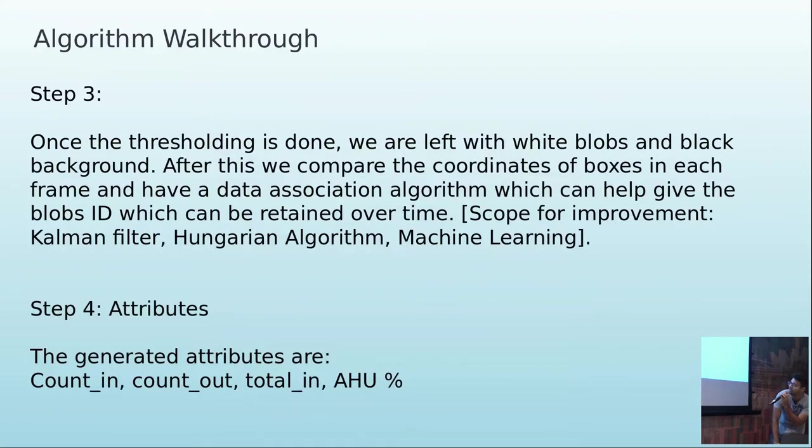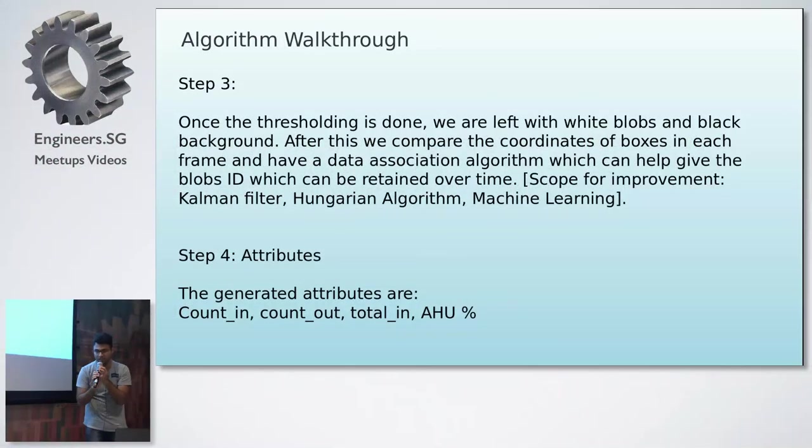These were the attributes we generated: count in, count out, total, AHU percentage. For example, in this room if the number of people increases, the aircon temperature should go down, but it doesn't because it's set point based. We actually proved using an LED that when crowd density increases, you can have an automation protocol linked with it. AHU is air handling unit - a term used in chillers and mechanical components to control the aircon.